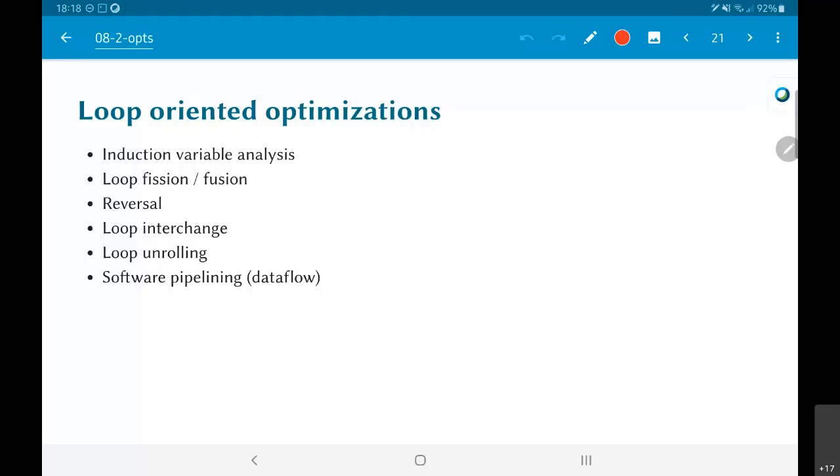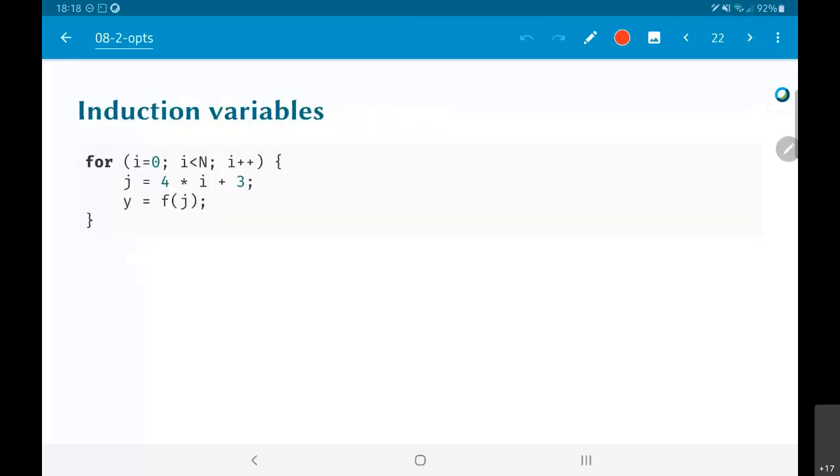Which leads to a whole lot of loop oriented optimizations which we will now get into one by one. The first one that we can think of is something called an induction variable optimization. What do I mean by induction variable? The loop variable i in this case is what we call the induction variable. When I say for i=0, i<n, i++, i is called the induction variable. Now, what do I do with this? If I look at this computation I am basically computing j = 4*i + 3 and then y = f(j). What does that involve? Every time inside the loop I basically need to do a multiplication and an addition. And the question is could I have got away without that?